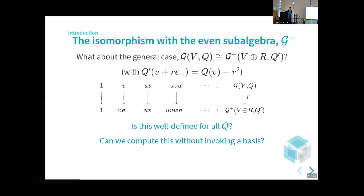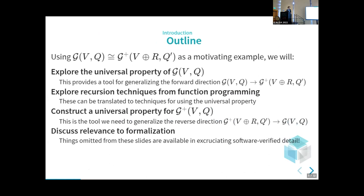So can we compute it without having a basis at all? Because if we can, we don't need to think about whether a change of basis affects our computation. To outline where this talk is going: using that isomorphism as a motivating example, we're going to look at the universal property of the Clifford algebra, which will let us make the forward direction. We'll look at some recursion techniques in functional programming that tell us how to soup up the power of this universal property. Then we'll construct a universal property for the even subalgebra, which I haven't seen anyone else do before. Finally, I'll discuss the relevance of all this strange abstraction to formalization.